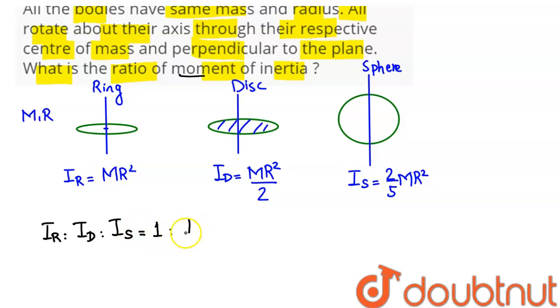Hence, this ratio comes as 1 to 1/2 to 2/5. So multiplying by 10, this ratio comes as 10 to 5 to 4.